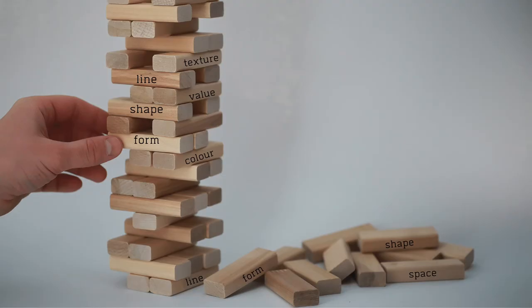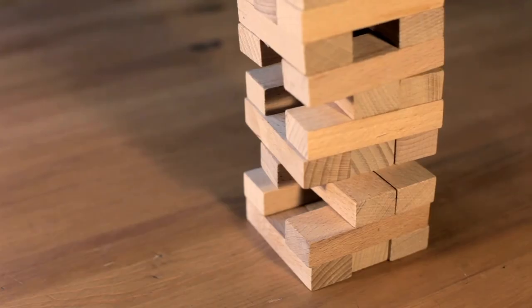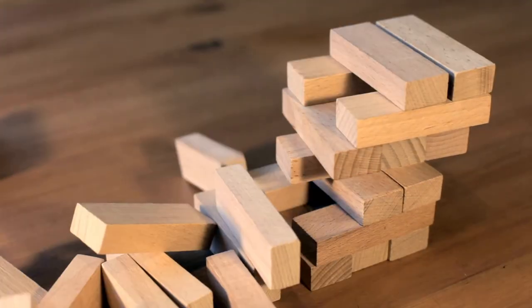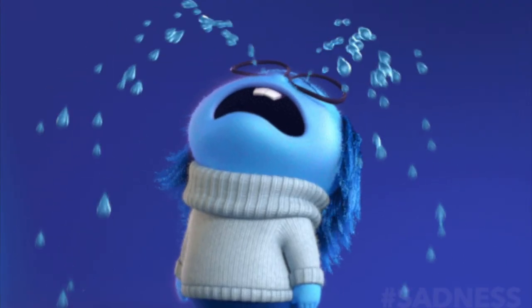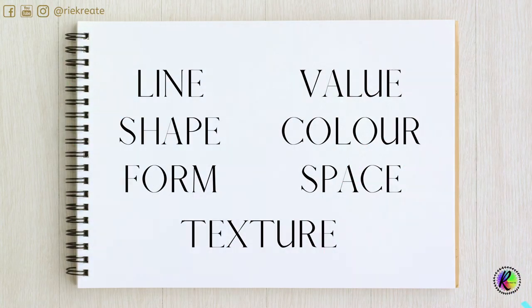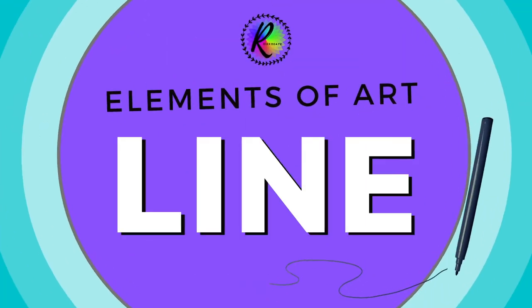If elements are overlooked, your composition will most likely be weak, boring, and unattractive. We are going to learn about one of the most important elements: line.